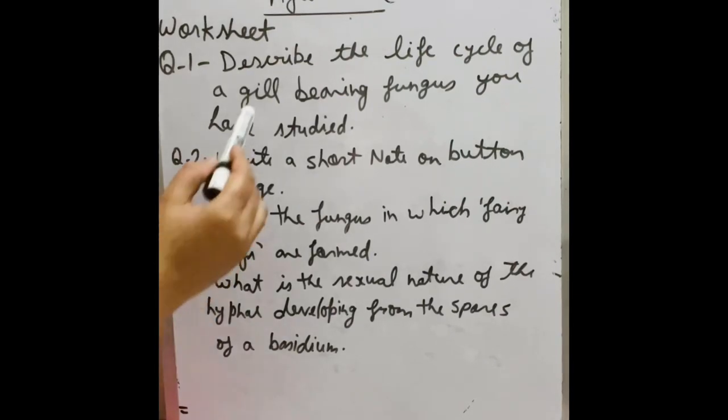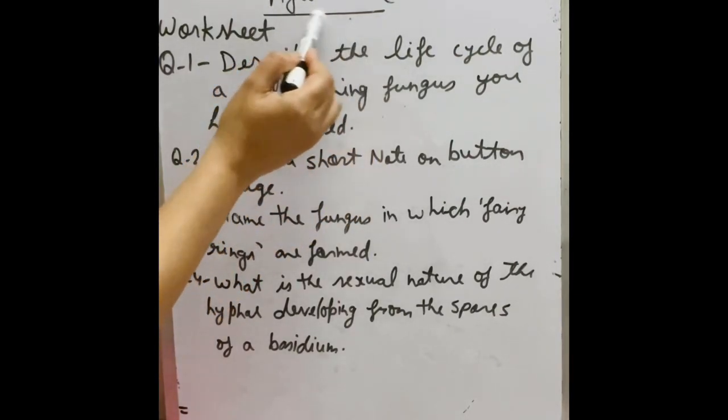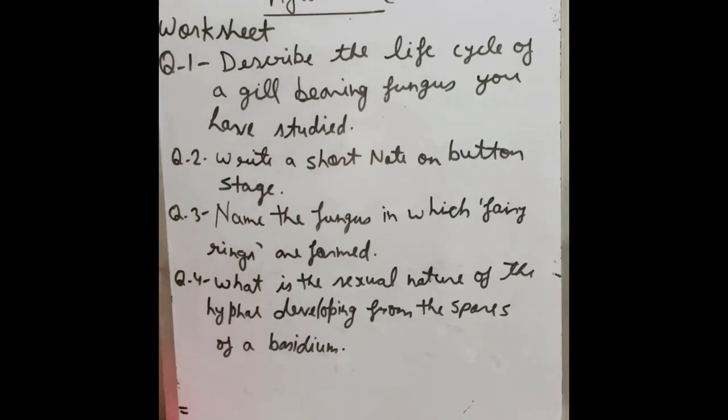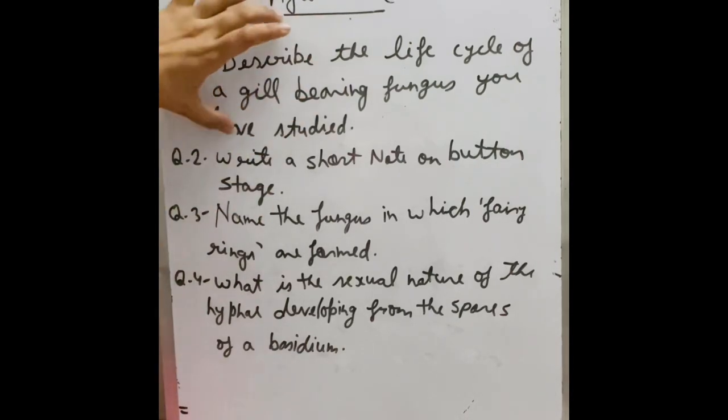As you know, which fungus is gill-bearing fungus? Agaricus. We know how many gills are present in Agaricus - about 300 to 600 gills. And you can describe the whole life cycle of Agaricus in the first question. That is a long question.